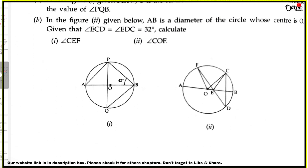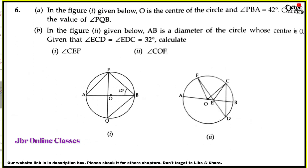Sum number 6, the last sum for this video. Problem A: In the figure, O is the center of the circle. Angle PBA equals 42 degrees. Calculate the value of angle PQB.